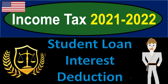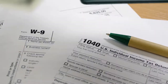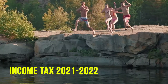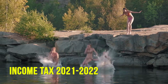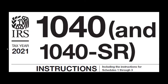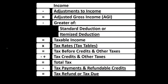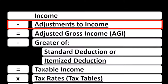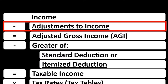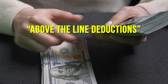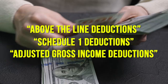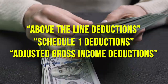Income tax 2021-2022, student loan interest deduction — get ready to get refunds to the max. Most of this information can be found in the Form 1040 Tax Year 2021 instructions on the IRS website, irs.gov. Looking at the income tax formula, the second line is the adjustments to income, also called the above-the-line deductions or Schedule 1 deductions.